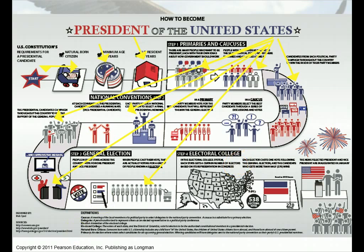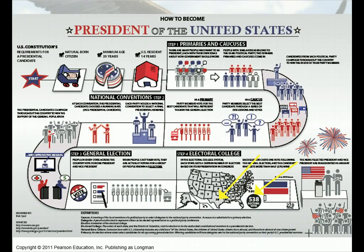The states each get a certain number of electors. The total number of electors for the entire country is 538, and Texas has 36. It's the number of congressmen you have in the state plus your two senators. The fact that you get the two senators added in makes it important because smaller states sometimes have an advantage when it comes to getting these votes, and oftentimes candidates will focus on the smaller states. Whichever of the two candidates gets the majority of the electoral votes wins; if there is a tie, then the full Congress has to decide which of the two candidates will win.